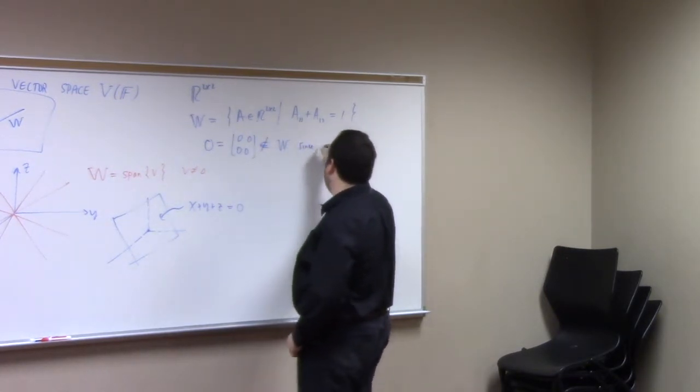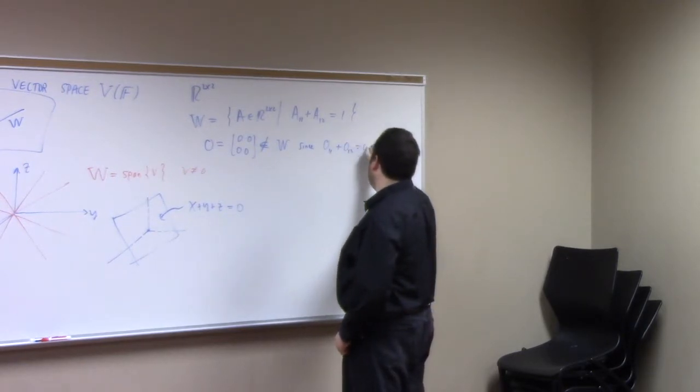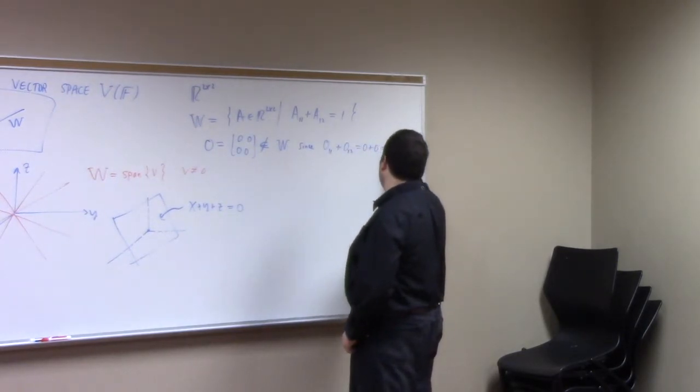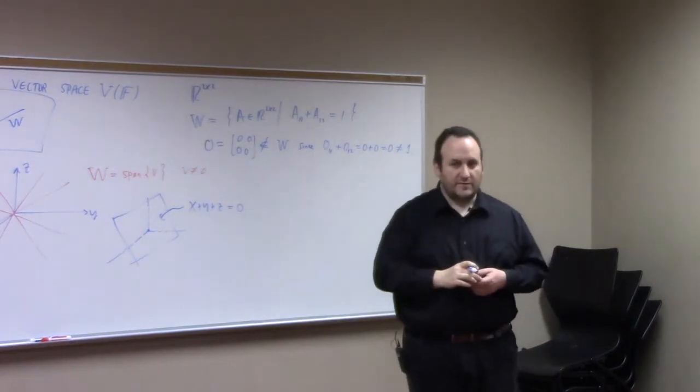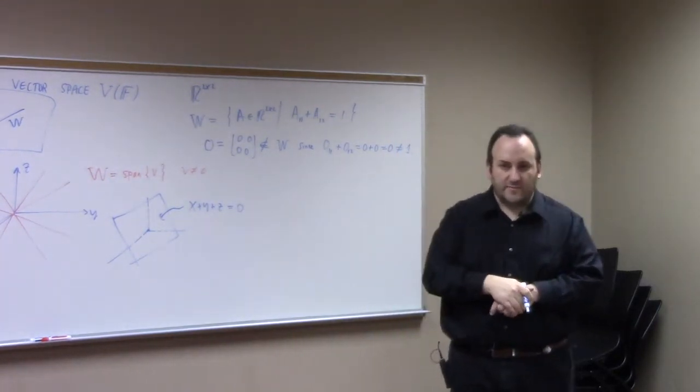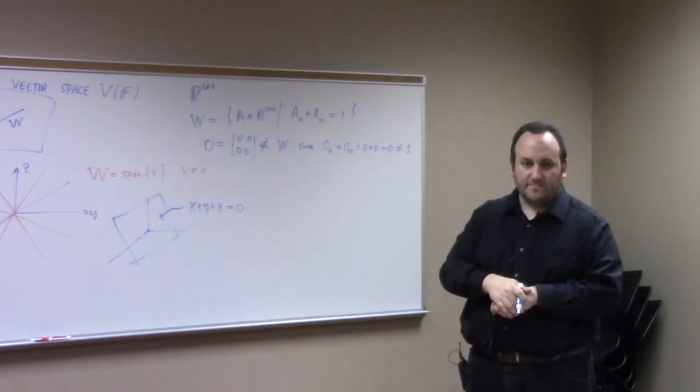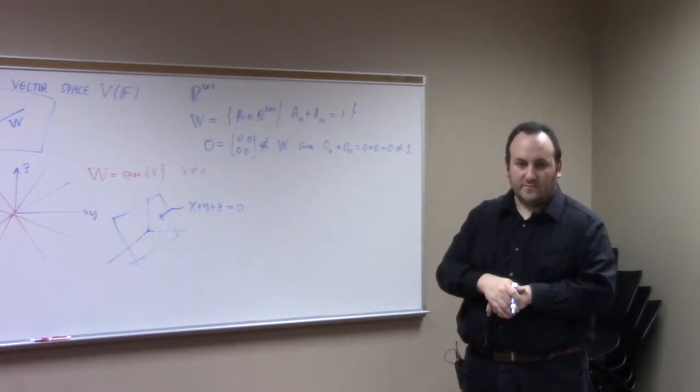It's not an element of w. Since what? 0,1,1 plus 0,1,2 is 0 plus 0, which is 0, which of course is not equal to 1, right? So this set fails to have the zero vector, so it's certainly not a subspace of the 2 by 2 matrix vector space.